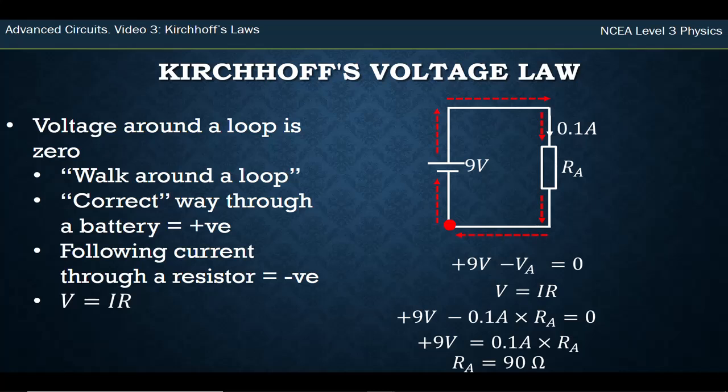That's a simple circuit you could have worked out with V = IR anyway, but I'm just showing you how to use these rules. What if you walk the other way around the loop? Well, let's start at the same place and we'll go the other direction. Now we're going through this component but we're going the opposite way to the current. See, the current's going down and we're going up.